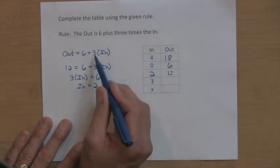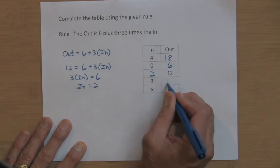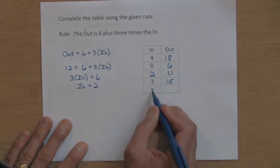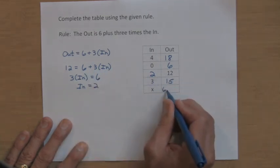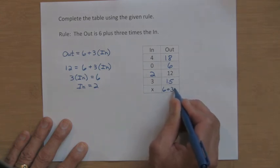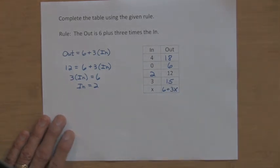If the in is three, three times three is nine, plus six more is 15. And then with the variable, if in is x, it's going to be six plus 3x. Just a way to write an expression for the out if the in is a variable.